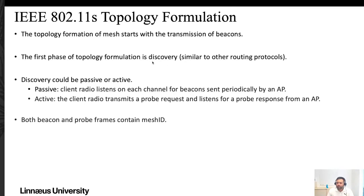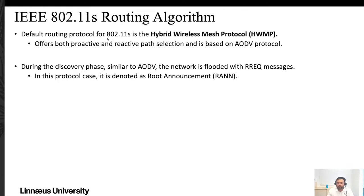Topology formation in 802.11s begins with beacon transmission for discovery, similar to the route request in AODV. Discovery can be passive — the client listens on each channel for beacons sent periodically by an access point — or active, where the client transmits a request and listens for a probe response. Both message types contain a Mesh ID. The default routing protocol for 802.11s is the Hybrid Wireless Mesh Protocol (HWMP), which offers both proactive and reactive path selection and is based on AODV. During discovery, the network is flooded with Root Announcement (RANN) messages.